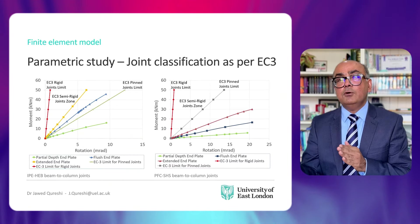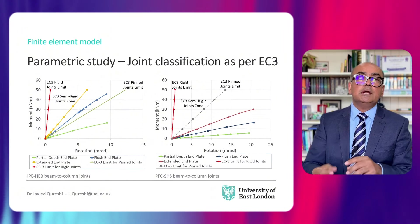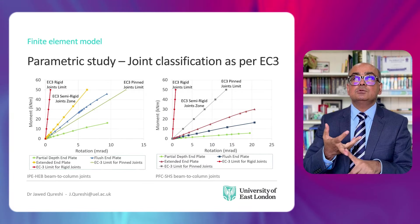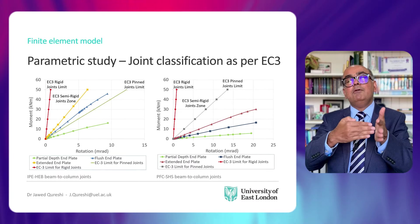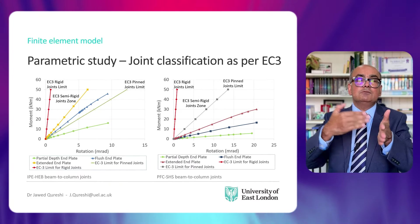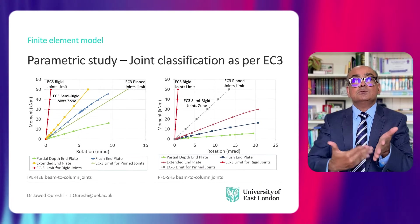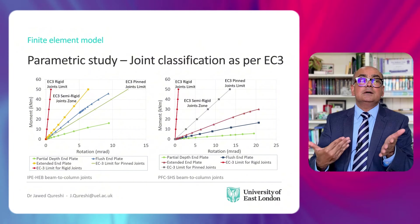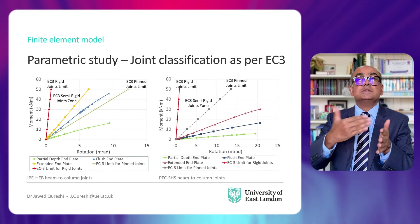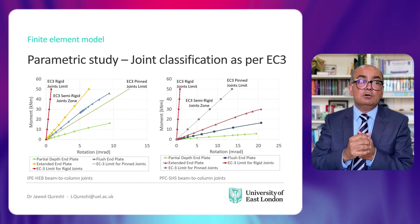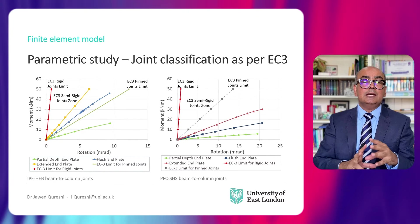On the other hand, for PFC to SHS beam-to-column joints, all joints — extended, full depth, and partial depth — are classified as pinned joints. This is quite understandable because when you have a channel section attached with the plate and then connected to the beam, it tends to rotate quite a lot because the parallel flange channel section itself is not symmetrical. Due to the asymmetry of this section, all joints are classified as simple or pinned.